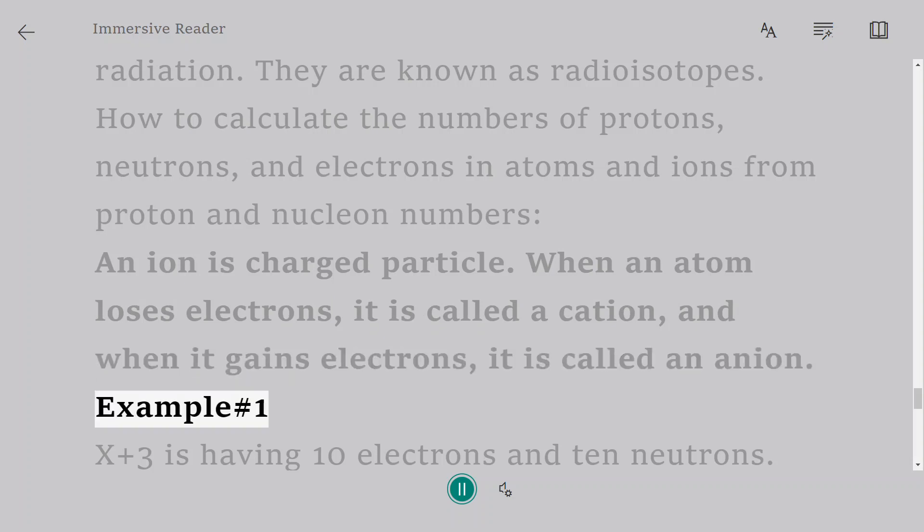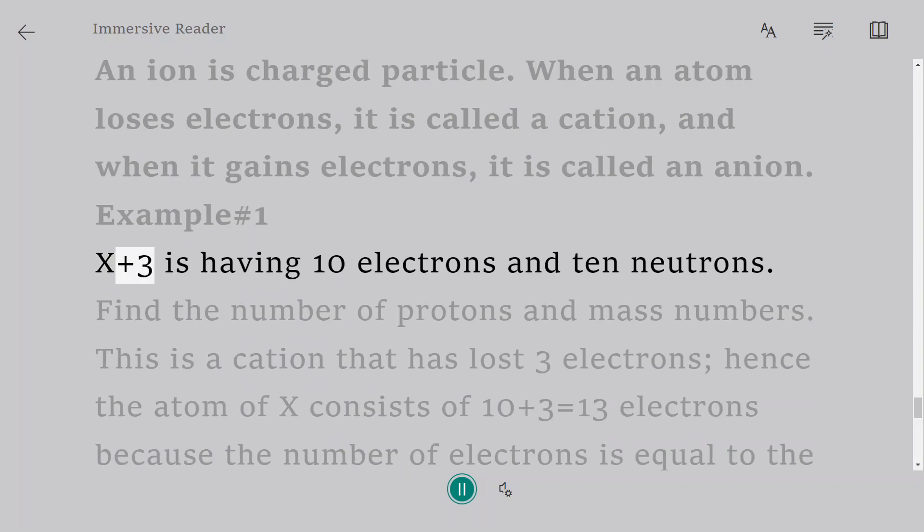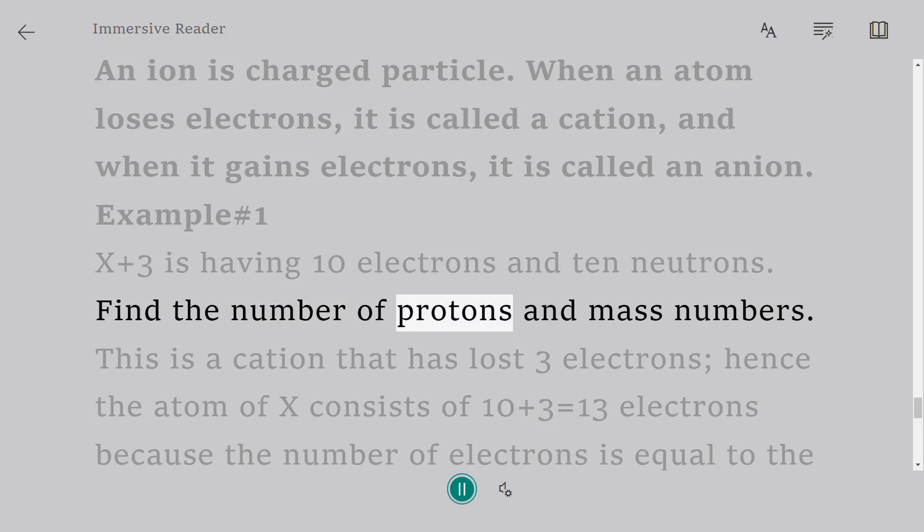Example number 1: X plus 3 is having 10 electrons and 10 neutrons. Find the number of protons and mass numbers. This is a cation that has lost 3 electrons.